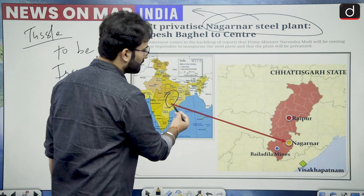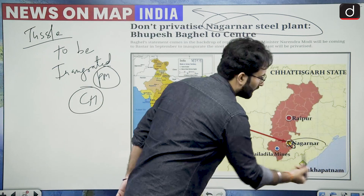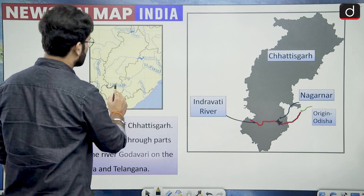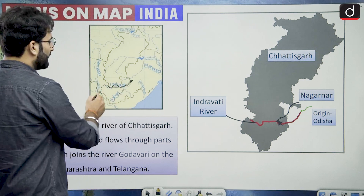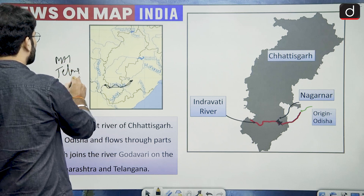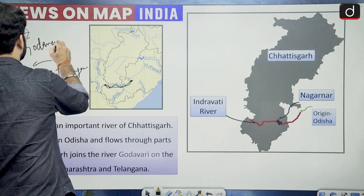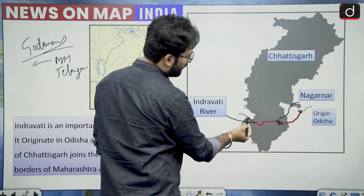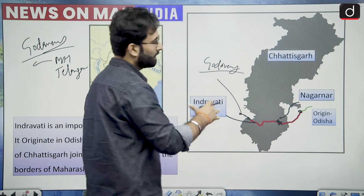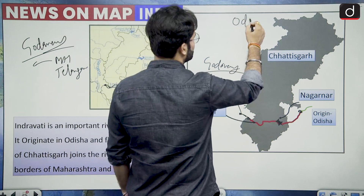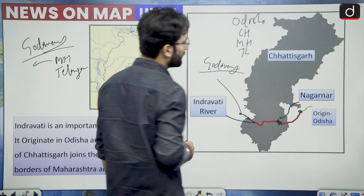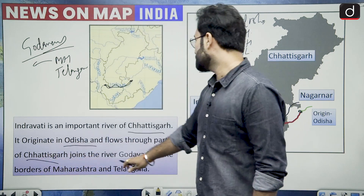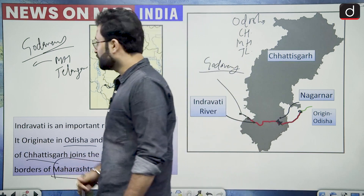When we talk about the location, it is in Chhattisgarh. Nagarnar steel plant is in Chhattisgarh. Here you can see this is the Indiravati river — it starts from Odisha, then flows westward, and on the border of Maharashtra and Telangana it meets with Godavari. Here you can see this is the origin, and then it flows through and meets with the Godavari river. So the states through which Indiravati flows are: Odisha, then Chhattisgarh, then Maharashtra and Telangana. Indiravati is an important river of Chhattisgarh — it originates in Odisha and flows through parts of Chhattisgarh, joining the Godavari on the borders of Maharashtra and Telangana.